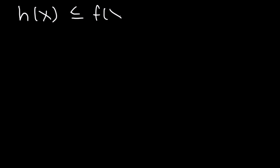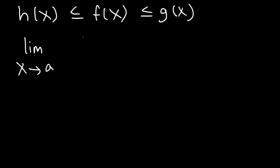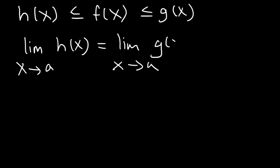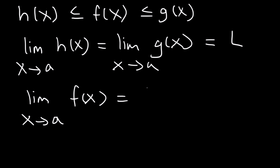Now let's talk about the squeeze theorem. The main idea is that if f(x) is greater than or equal to h(x) but less than or equal to g(x), so f is between h and g, and if the limit as x approaches some number a of h(x) equals the limit as x approaches a of g(x), and that value is L, then the limit as x approaches a of the middle function f(x) must also equal L. If the small and large functions both have limit L, the one in the middle must share that same limit. That's the main idea behind the squeeze theorem.